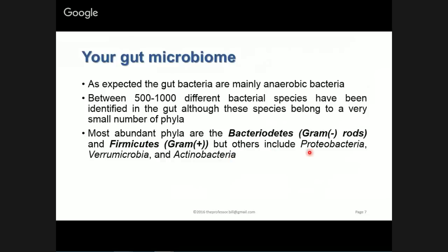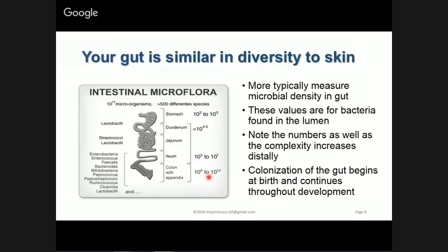Just like the skin, we have different quantities and populations of bacteria in different parts of our GI tract. We don't have very many in the esophagus, for example. Overall, we have somewhere between 500 and 1,000 different species of bacteria in your GI tract — from your stomach all the way down to your large intestine, with the duodenum, jejunum, and ileum being parts of your small intestine.